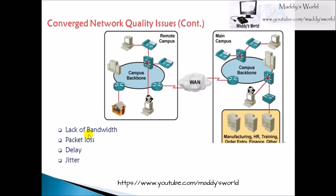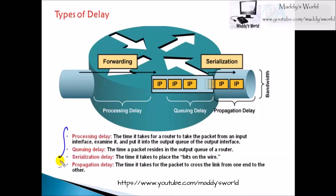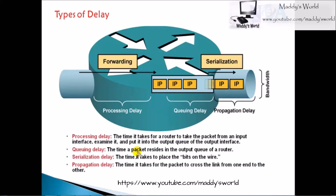The third problem is delay. There are different types of delays: processing delay — the time taken by the device to process packets; queuing delay — how long packets are queued before being sent; and propagation delay — the time taken before packets are actually transmitted. All these types of delay affect how long it takes for information to be delivered across the network.